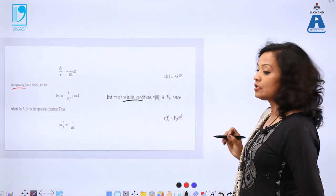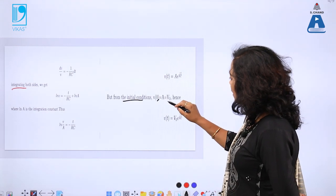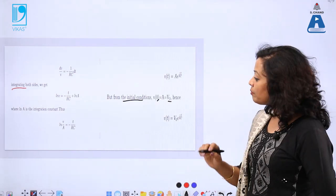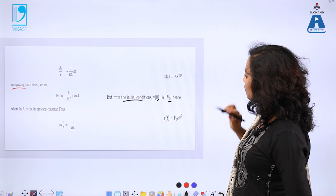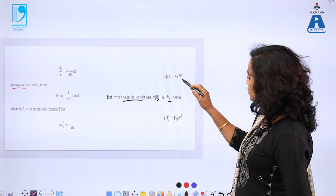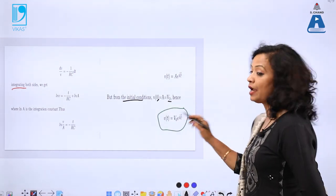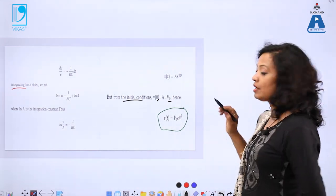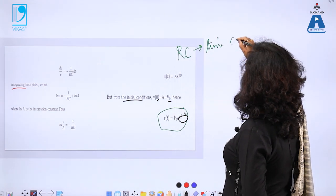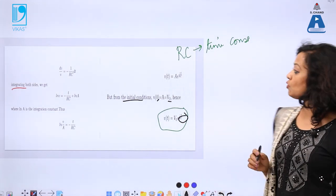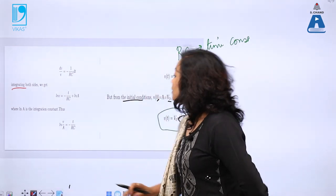To find the constant A, we apply the initial condition. We discussed that initially the capacitor is fully charged, so at t equals zero the voltage is the full voltage V0 — the entire input voltage appears across the capacitor. Putting t equals zero: V0 equals A. Therefore A equals V0, and the equation of voltage at time t is v(t) equals V0·e^(−t/RC).